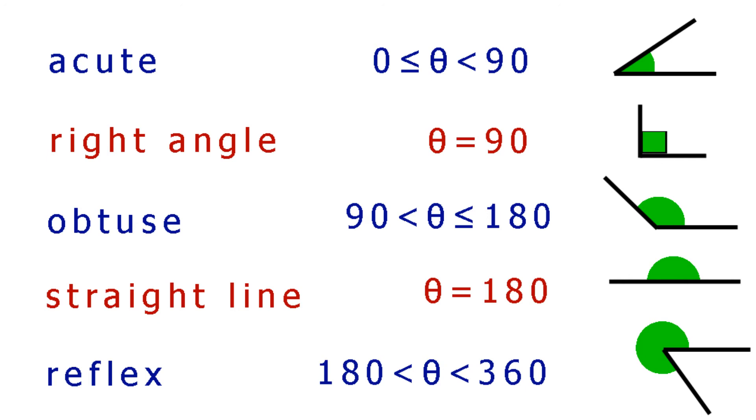First, the acute angle. Greater or equal to 0, but less than 90 degrees. Right angle, equal to 90 degrees. Obtuse angle, greater than 90 degrees but less than or equal to 180 degrees. A straight line, equal to 180 degrees. Reflex angle, greater than 180 degrees but less than 360 degrees.